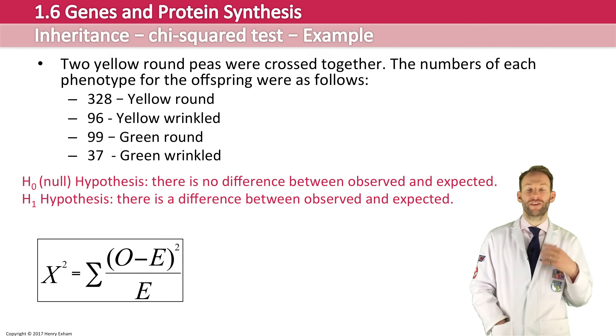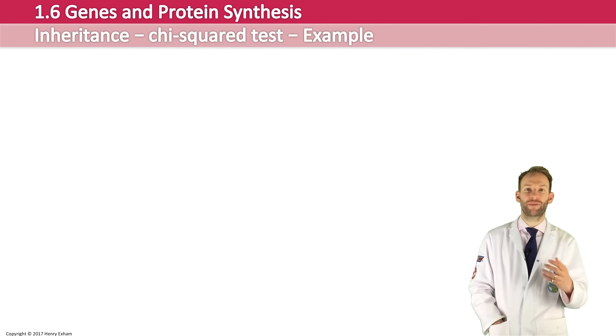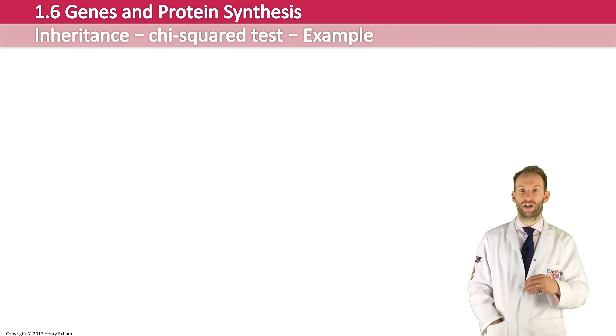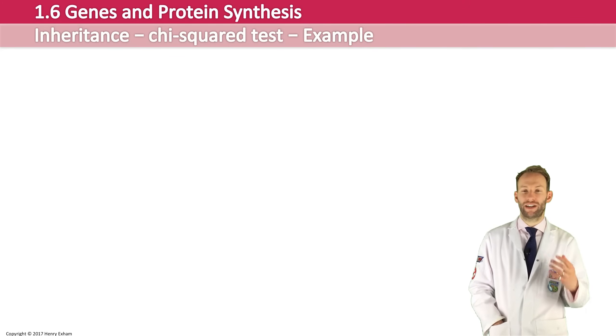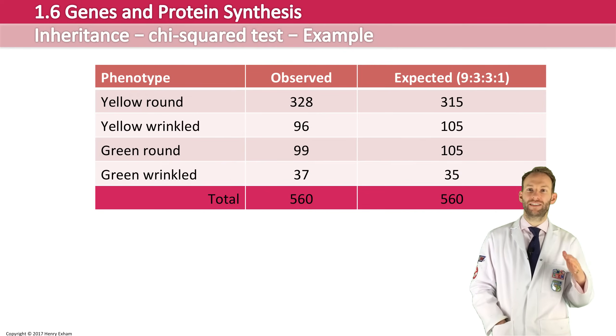All right, so in this case, we're expecting it to be Mendelian. We're expecting a 9 to 3 to 3 to 1 ratio. So we've got our observed results, and then we know what our expected results are. Based on how many offspring we had, 560, we can work backwards and pull into this table the expected results, which are shown.